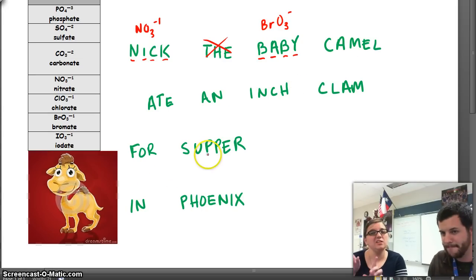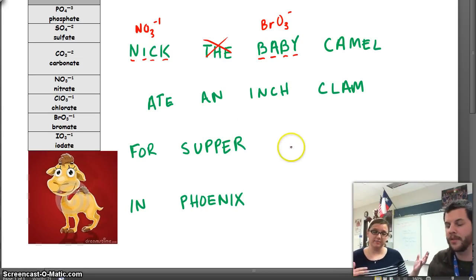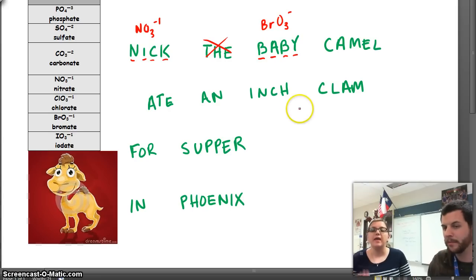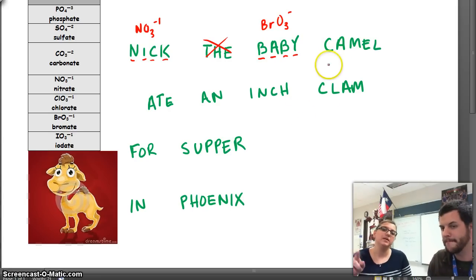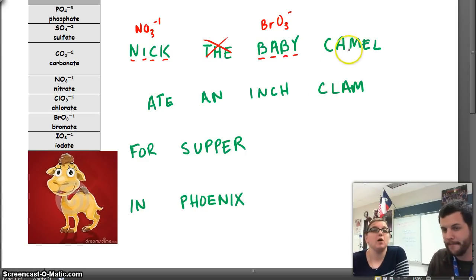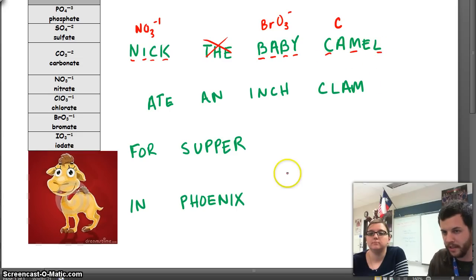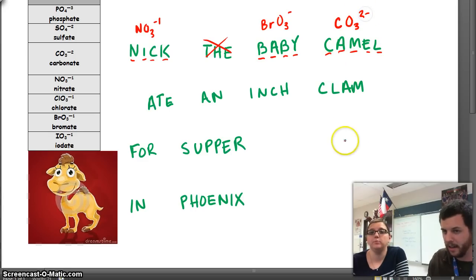You notice there's camel and there's clam, because there are technically two that start with C: carbonate and chlorine. Camel is for carbonate — C-A — and clam will be for chlorine — C-L. So carbonate starts with what element? Carbon. Write down carbon. How many consonants? Three consonants — that's your oxygen, so CO3. And how many vowels? Two. So two minus — carbonate is CO3 with a 2- charge.